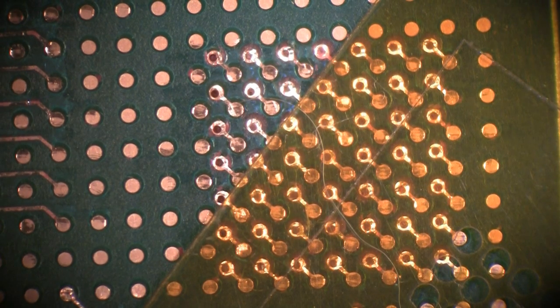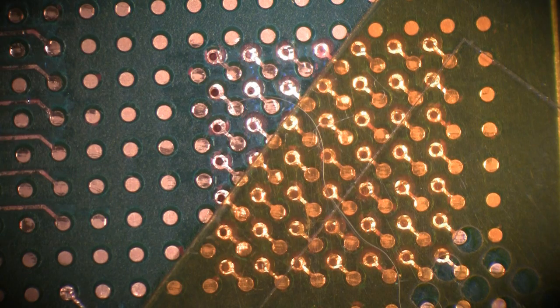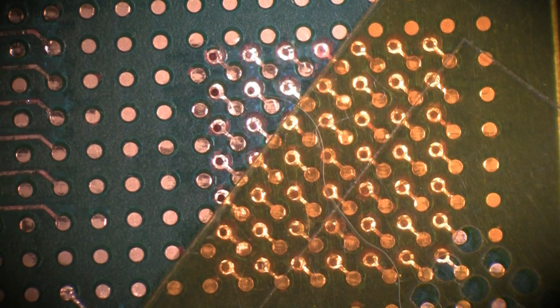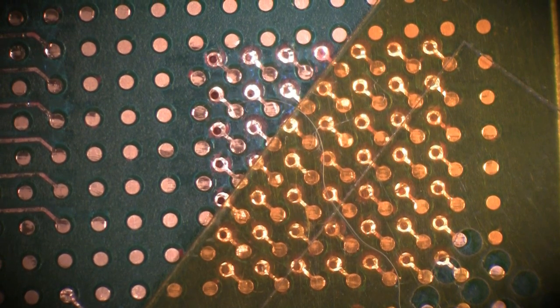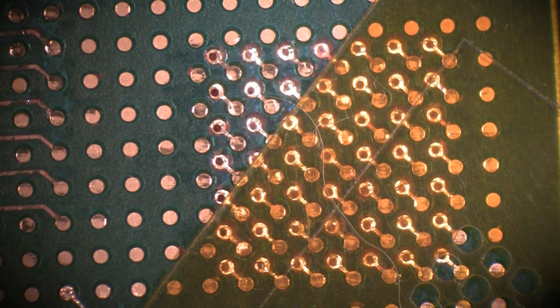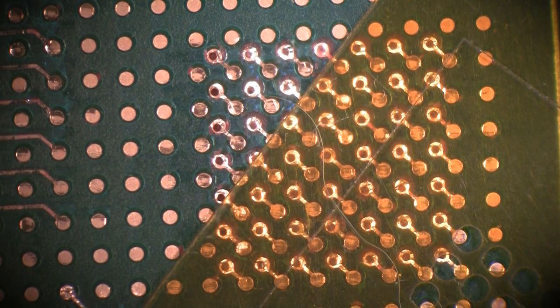Now how does solder mask damage occur? It can occur in many different ways. One, removing conformal coating and you accidentally remove the solder mask from the areas. Another way and one of the common ways that I see in BGA rework is whenever they are using solder wick to remove the solder mask. Instead of going straight up and straight down, they slide the solder wick all around and it damages the solder mask.